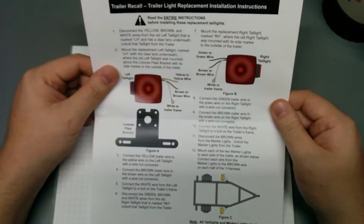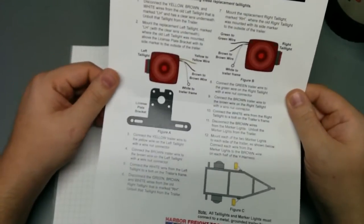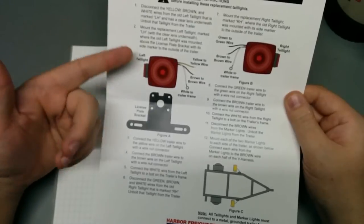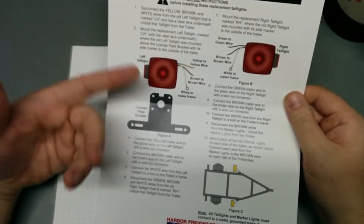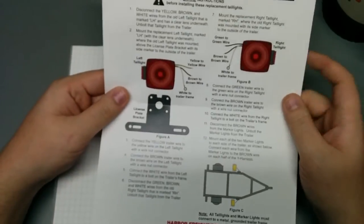And this is the instructions that came with it, which is pretty much generic. It says remove the lights, install the new lights, for both the rear and the side indicators.